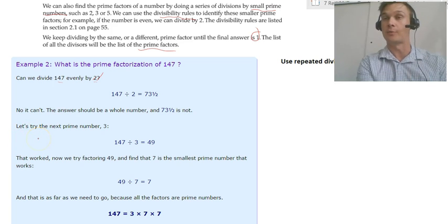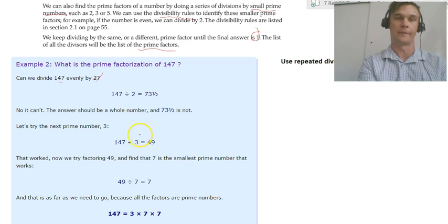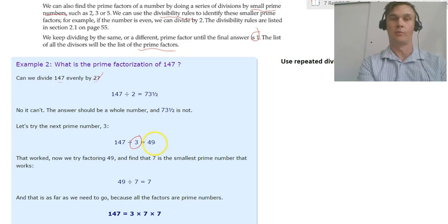Let's try the next lowest prime number which is 3. So the next number is 3, 147 divided by 3, that equals 49. Okay, so yes we can. So we move that one, 3 will be our first prime factor.